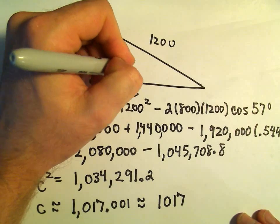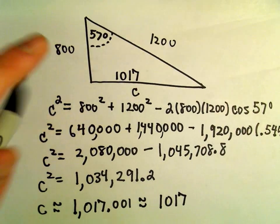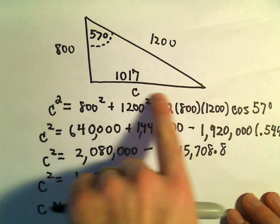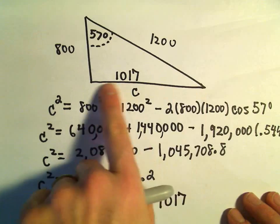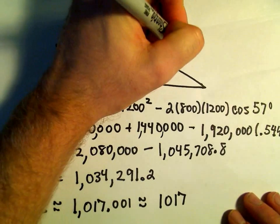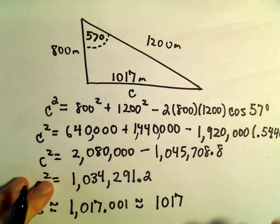So now this missing length of the fencing that will be required will be another 1,017 meters. I think those were our original units.